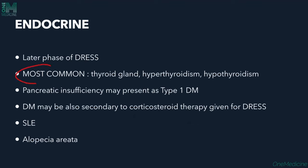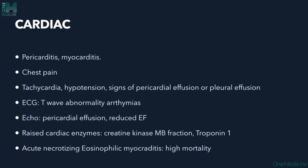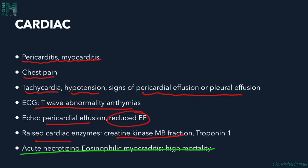CNS manifestations include headache, seizures, cranial nerve palsies, limbic encephalitis, and aseptic meningitis. Endocrine involvement is most common in the thyroid — both hypo- and hyperthyroidism are seen. Pancreatic insufficiency resembling type 1 diabetes and corticosteroid-induced diabetes may occur. Gastrointestinal manifestations include bloody diarrhea, eosinophilic esophagitis, and dysphagia. Cardiac manifestations include endocarditis, pericarditis, myocarditis, tachycardia, hypotension, T-wave abnormalities on ECG, arrhythmias, pericardial effusion, reduced ejection fraction, and raised cardiac enzymes. Acute necrotizing eosinophilic myocarditis carries high mortality.